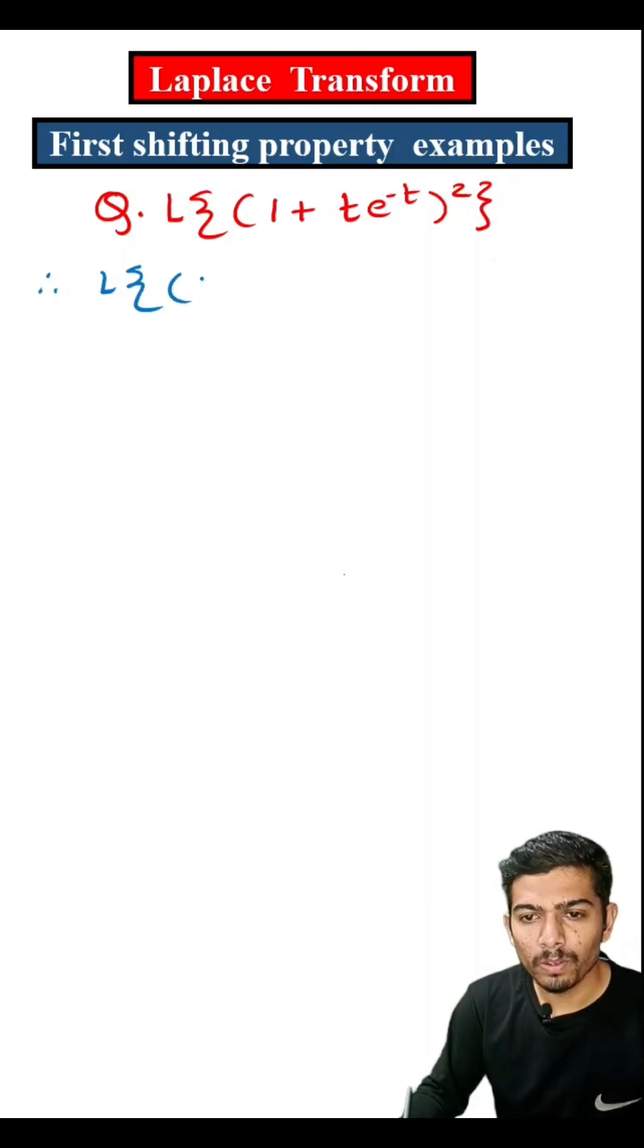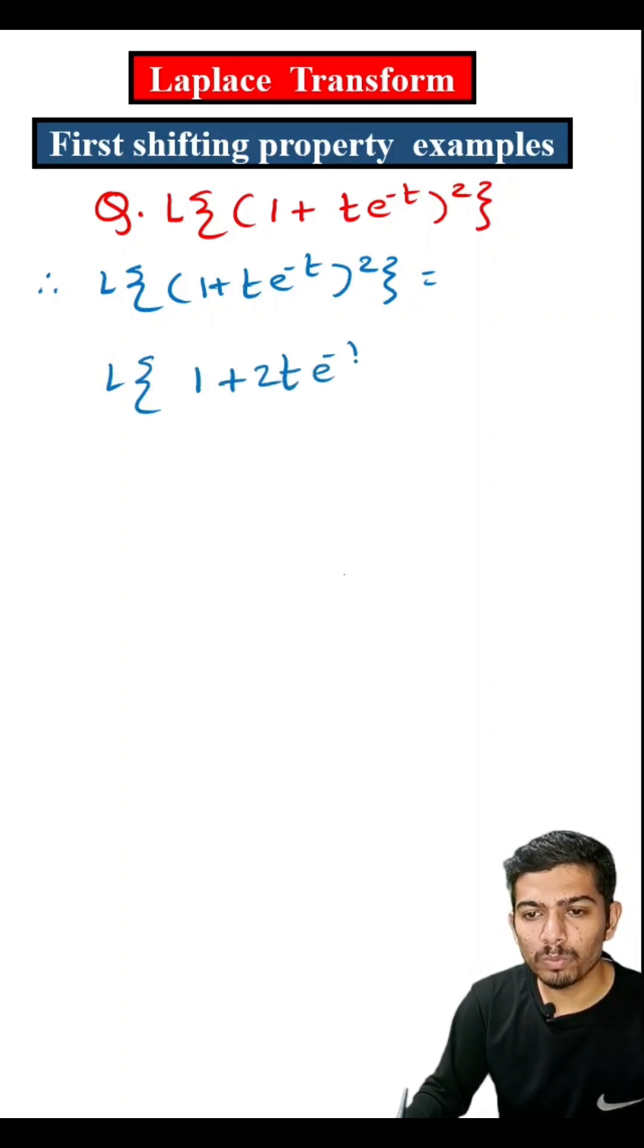So therefore, Laplace transform of (1 plus t e raised to minus t) bracket square equals Laplace transform of 1 plus 2t e raised to minus t plus t square into e raised to minus 2t.